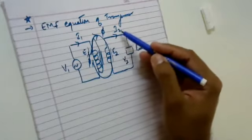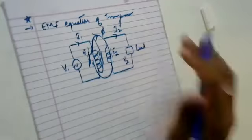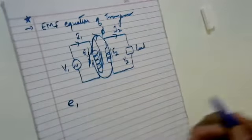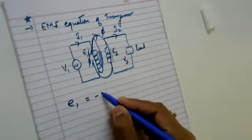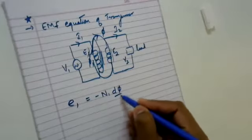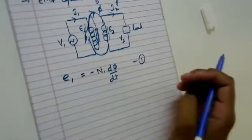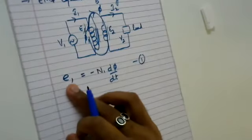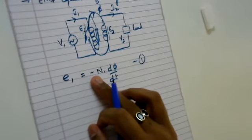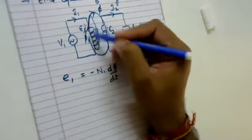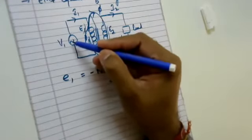The current I2 is also alternating. Now, E1 — the self-induced EMF — is given by E1 = −N1 dφ/dt. Let me call this equation 1. Where E1 is the self-induced EMF. This negative sign is in accordance with the fact that the induced EMF will have a polarity in phase opposition with respect to the applied voltage.